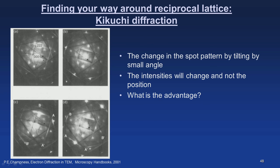Looking at this electron diffraction pattern, we discuss the exact Bragg condition and deviations from it. We are finding your way around the reciprocal lattice, looking at the effect of specimen thickness and tilting. When you tilt by a small angle, the intensities change but not the positions. This allows simple tilting experiments to obtain two-beam conditions or to excite particular diffraction positions.